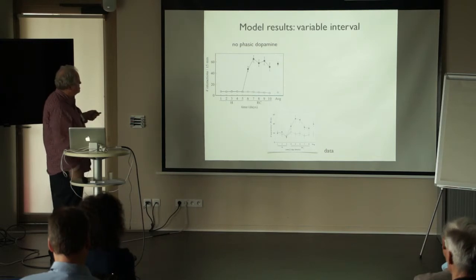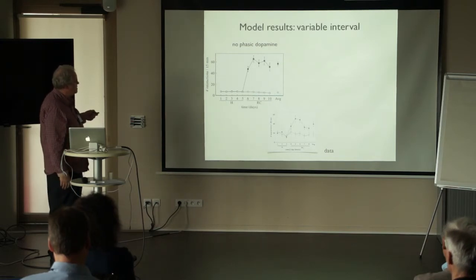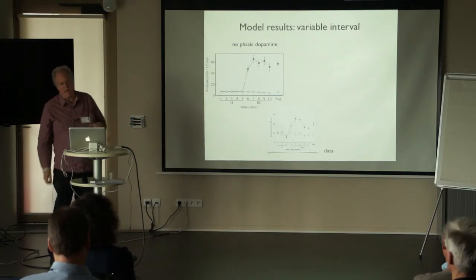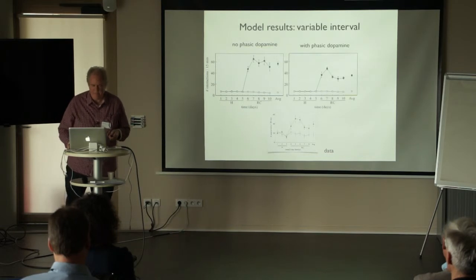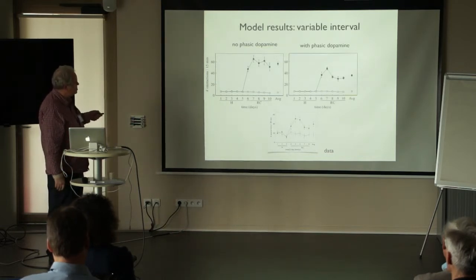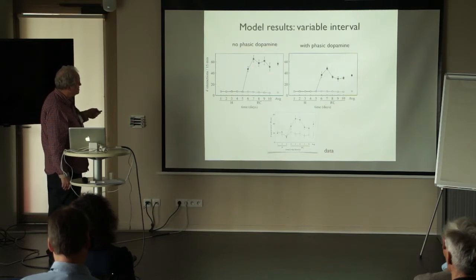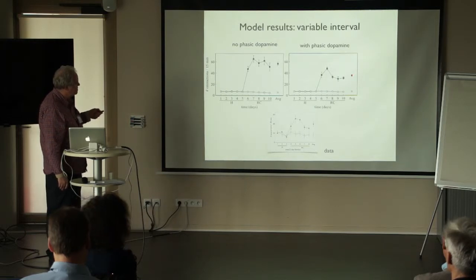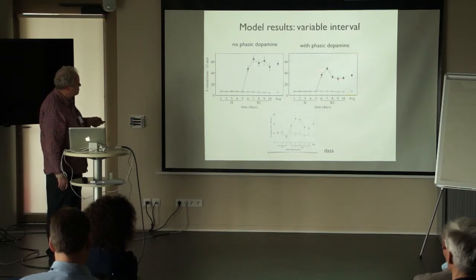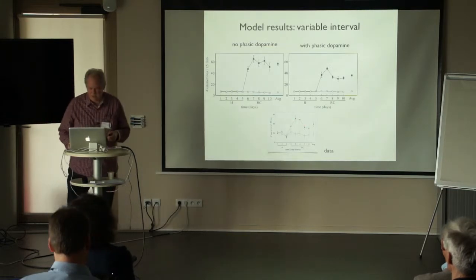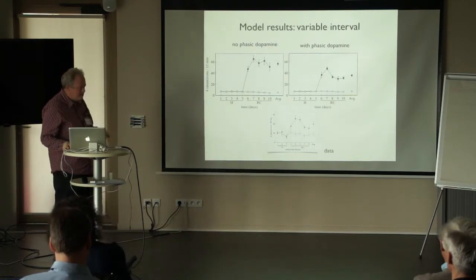Now we start to get things that look more like the real data. With no phasic dopamine, the response is driven entirely by novelty salience. But with phasic dopamine, we get an interesting result: first, the entire mean activity is dropped a little bit — the mean activity in the active phase is smaller. And we also get the shaping of the time series, which looks reminiscent of the shape in the data. So the plasticity is actually doing something that helps us mimic this data.